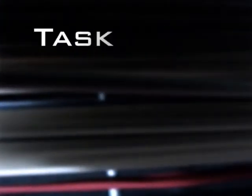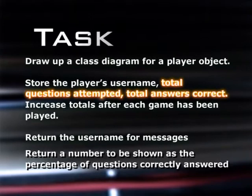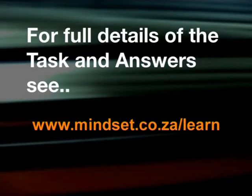Here is your task for today. Draw up a class diagram for a player object, which must store the player's username and two totals. One total is for the number of questions attempted. The other is for the number of answers which were correct. These totals must be increased after each game has been played. The object must be able to return the username for messages and a number that will be shown to the player as the percentage of questions correctly answered. Don't forget to say what is private and what is public. That's all for today. Have fun with your class diagrams and data flow diagrams. See you soon.